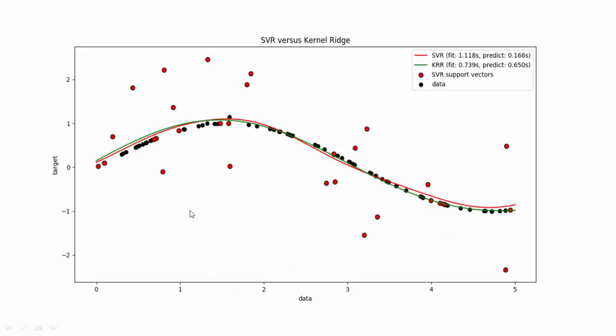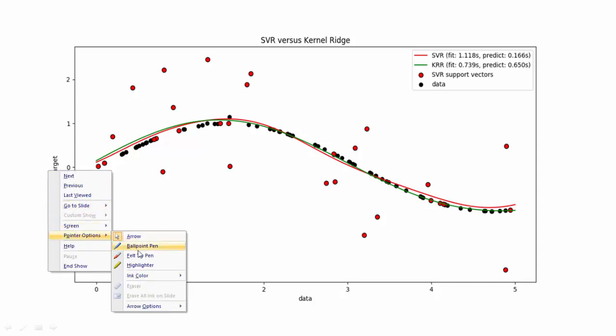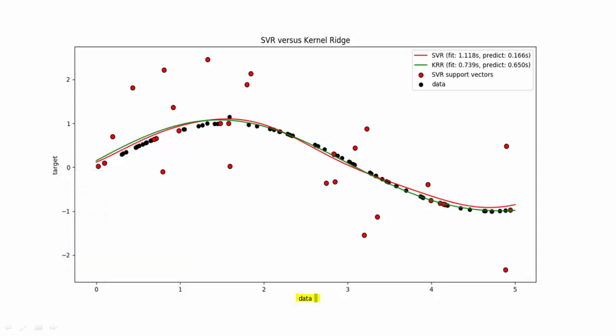In this slide I am showing you the support vector and the difference between support vector regression and SVM. This is just a simple plot to show the regression. Here is the data and the target. This is what we need to understand: data as well as target.